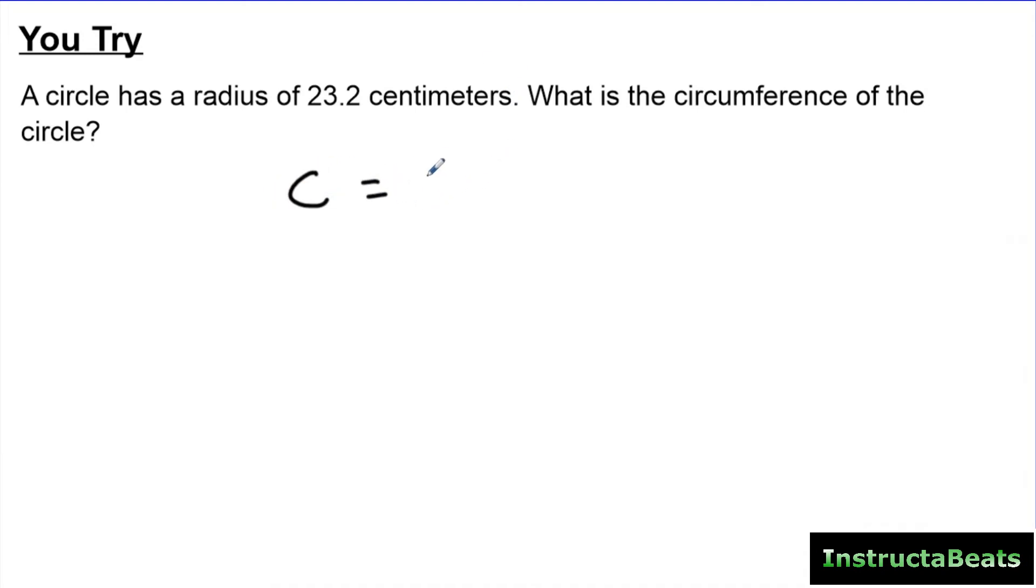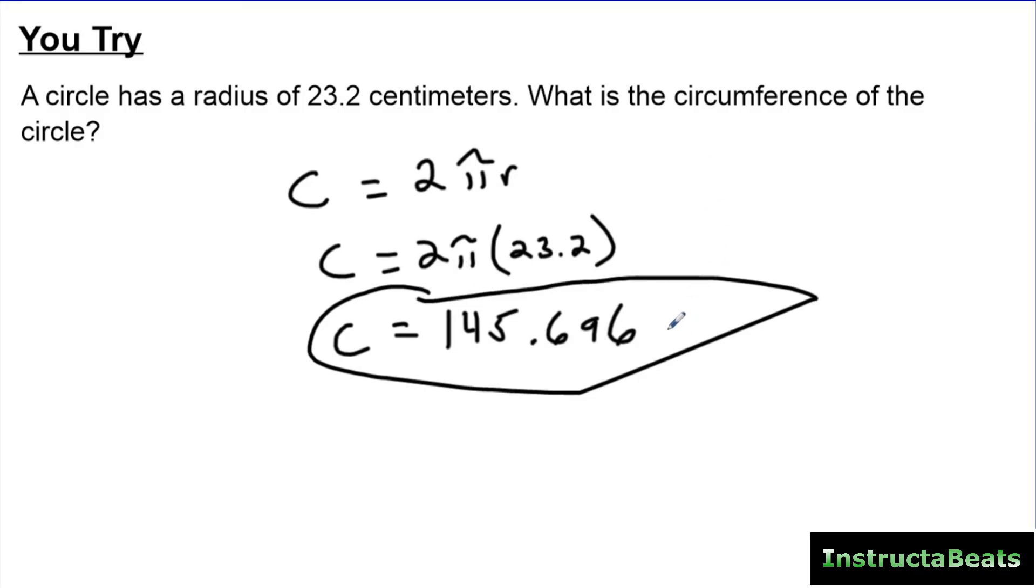So I know my circumference, the perimeter of the circle, is going to equal 2πr. And so I'm going to do 2 times pi times 23.2. And I'm going to multiply all those together. And the circumference of the circle, or to get all the way around it, is 145.696 centimeters.